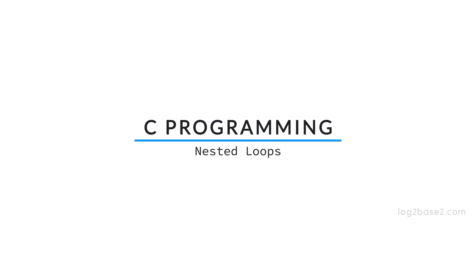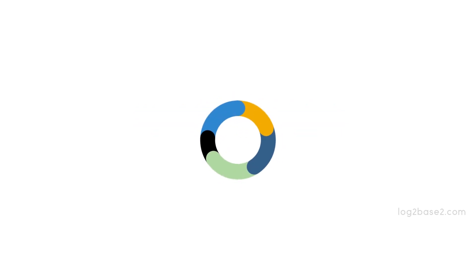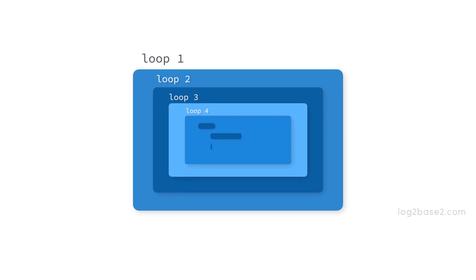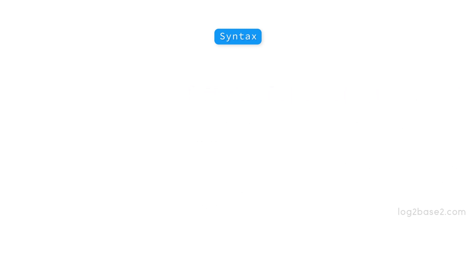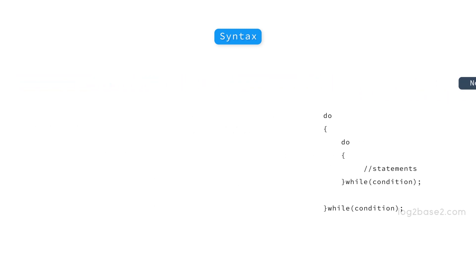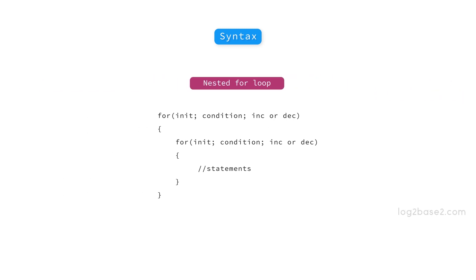Hi friends! In this video, we are going to discuss about nested loops in C. The C programming language allows us to create nested loops, or we can say a loop inside another loop. This is the syntax for nested while loop, this is the syntax for nested do-while loop, and this is the syntax for nested for loop.